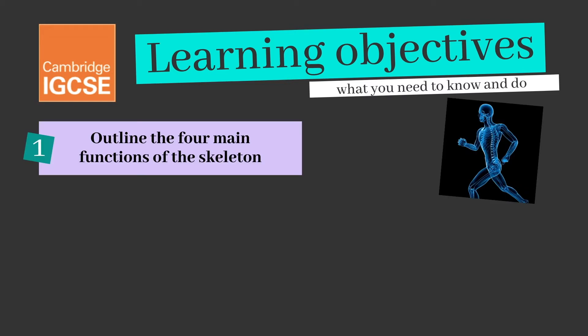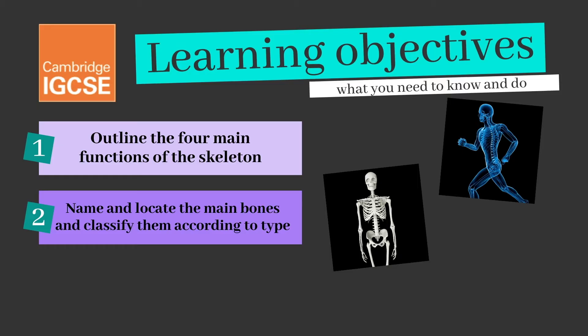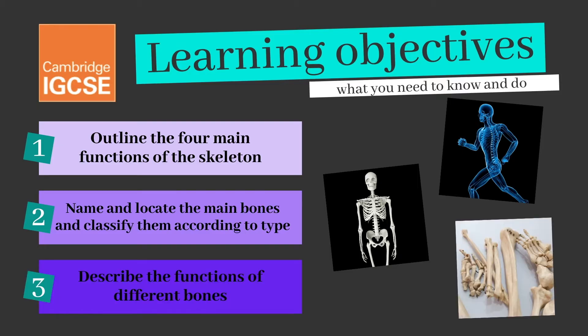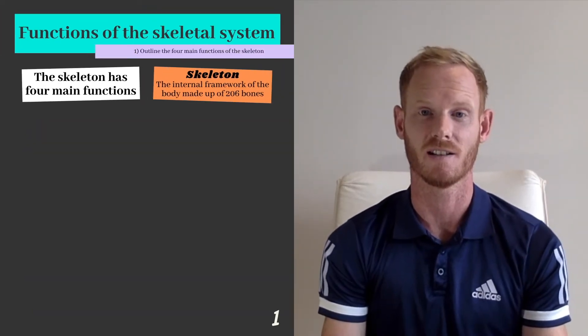The first objective today is to outline the four main functions of the skeleton, to name and locate the main bones and classify them according to type, and to describe the functions of the different bones. So let's begin with the first objective.